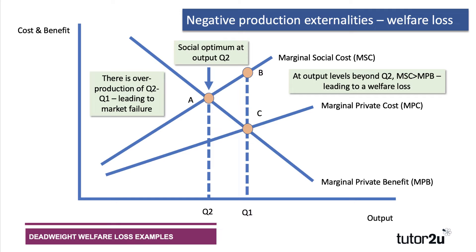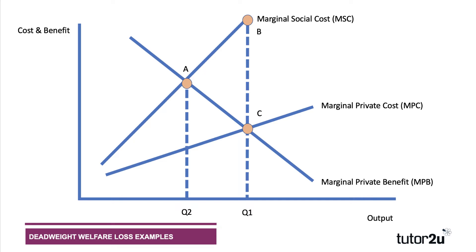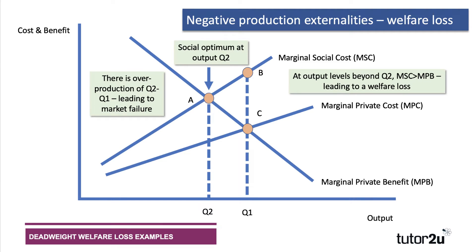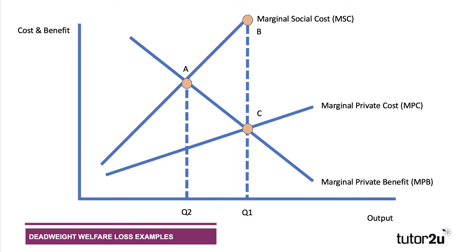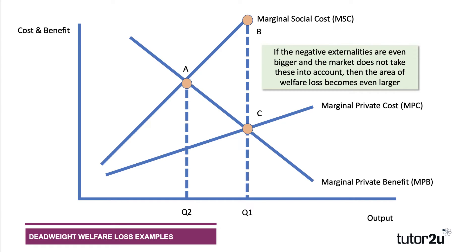That welfare loss area will get bigger the greater the externalities. If we compare this slide with the next one, I've made the externalities significantly bigger, so there's an even greater divergence between private cost and social cost. The welfare loss is ABC because output is too high at Q1 relative to where society would want it to be. If we increase the scale of the external cost, you can see there's a huge gap now between social cost and private cost. The private optimum is Q1, the social optimum is Q2, and the welfare loss diagram gets even bigger.